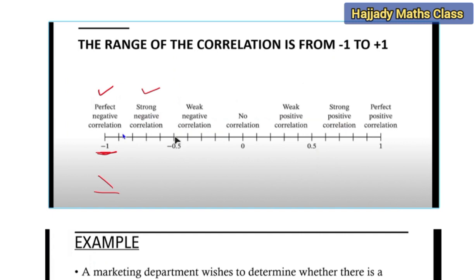But if your correlation is from negative 0.5 to 0, that means you have weak negative correlation. And if your correlation is 0, we say no correlation. If the value of your r is from 0 to 0.5, we have weak positive correlation. And from 0.5 close to 1, we say we have strong positive correlation. And lastly, if r is 1, we say that we have perfect positive correlation.